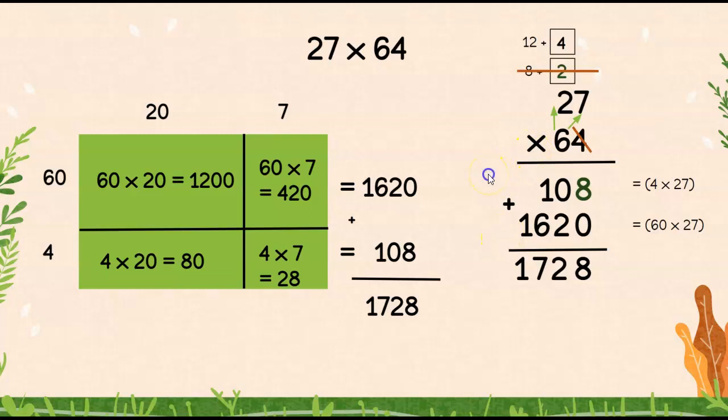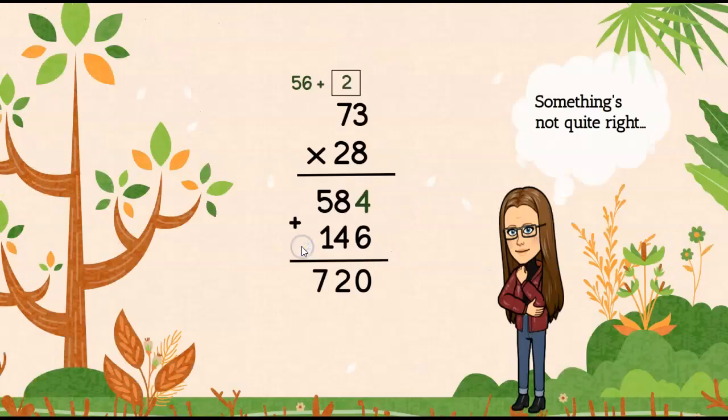All right, now let's look at, I brought this in. It's like, which one do you like better? Arrays, standard algorithm, or double and half? I guess you can tell which one I like better. So now we are focusing on standard algorithm. It generally is the most efficient way. However, we do make errors.